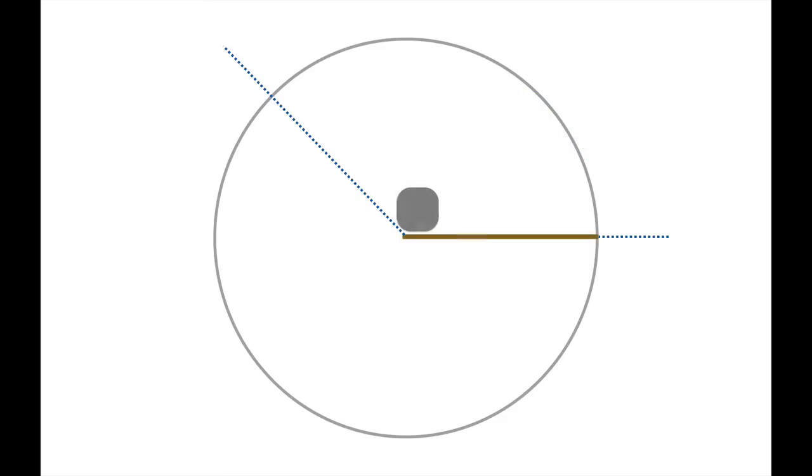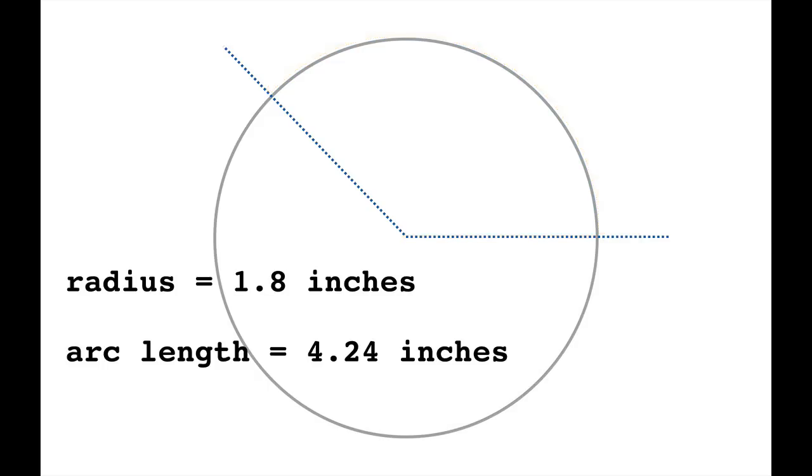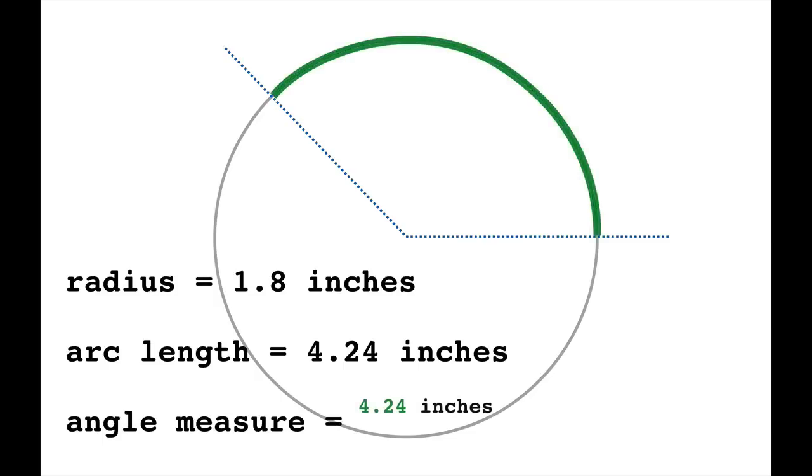Well, you could simply measure the radius first. Let's suppose you got about 1.8 inches for that measurement. You could take that tape measure and then measure around the arc subtended by the angle. Let's suppose your arc length was 4.24 inches. Just ask yourself how many radii fit inside of that arc—you would just take the quotient. So the angle measure would be 4.24 inches divided by 1.8 inches. That would tell you the number of radii that fits.